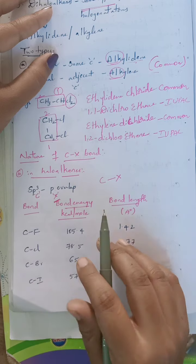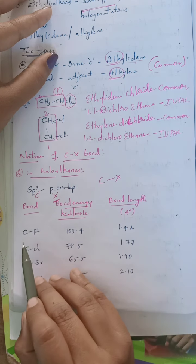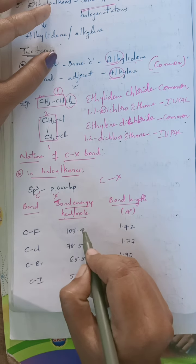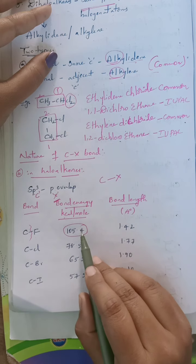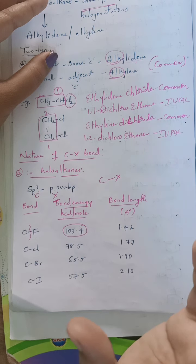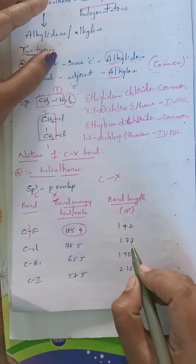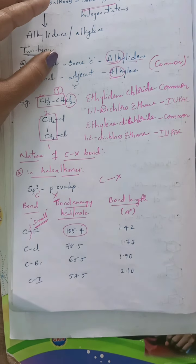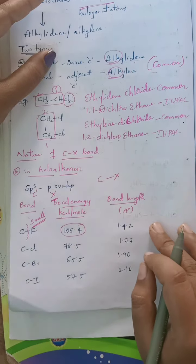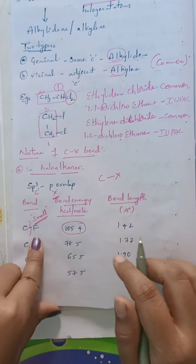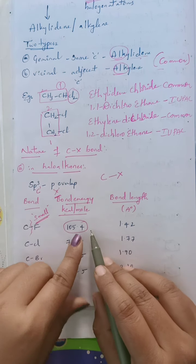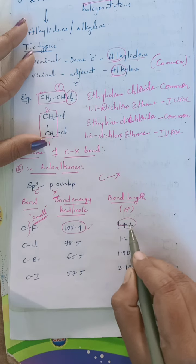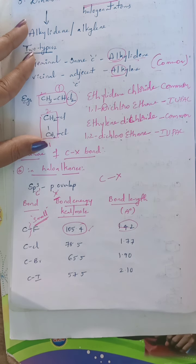For different types of carbon-halogen bonds, bond energy and bond length are represented here. The carbon-fluorine bond energy is 105.4 kilocalories per mole — that means this much energy is required to break this bond. This is more compared to the other three halogens. When bond strength increases, bond length decreases. This is due to the smallest size of the fluorine atom. Since fluorine is the first member of the halogens and its size is very small, its bond length is the shortest at 1.42 angstroms.